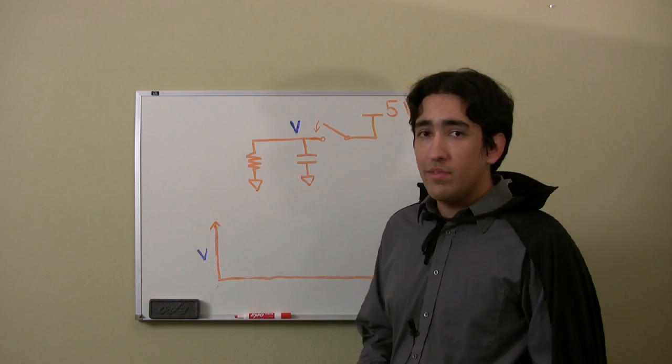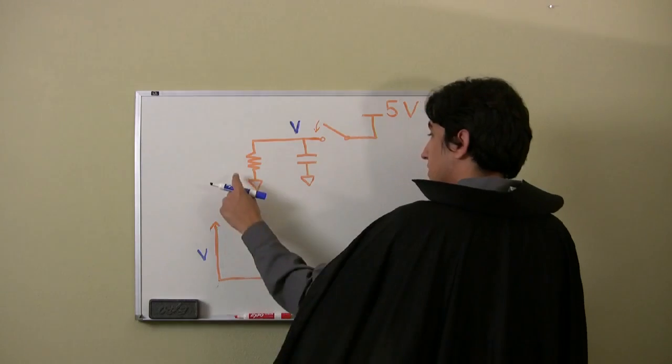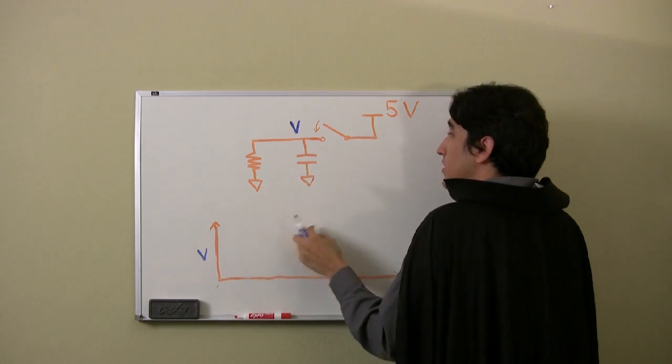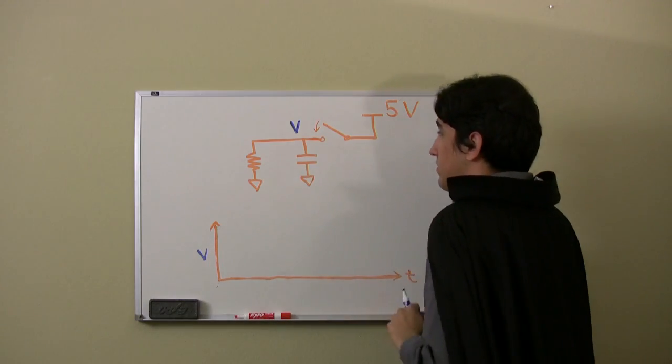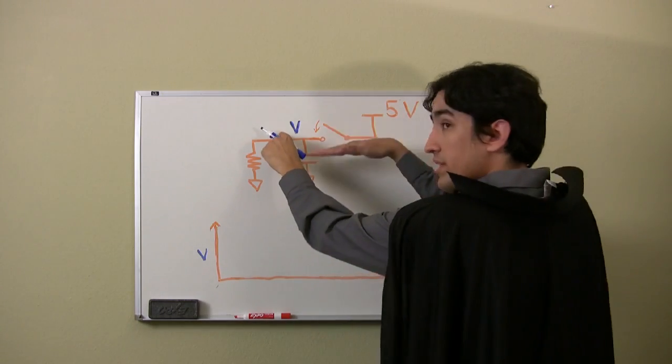Let's go over the basics of the system. Say we had a simple RC circuit just like this one, with a resistor and a capacitor in parallel, and a switch going up to 5 volts. Let's look at what happens to the voltage at this node when I open and close this switch.